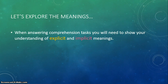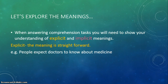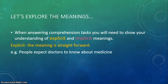Let's jump straight into it. First things first, we're going to look at the meanings of the text. You will really need to know explicit and implicit meanings for the exam. First and foremost, we're going to look at explicit, which means the meaning is straightforward. Underneath the explicit definition, you can already see one sentence which is very straightforward: people expect doctors to know about medicine. Everything's straightforward — there's nothing sneaky about that sentence. The meaning is explicit.